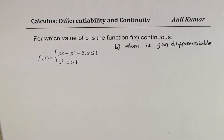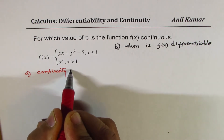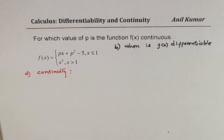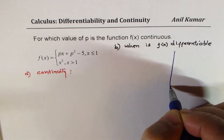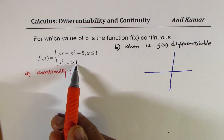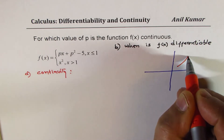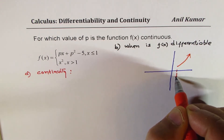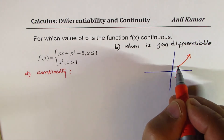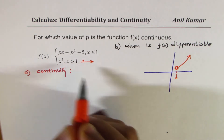Let's do part a and talk about continuity. The given function is a piecewise function. If I sketch this function, it should be a parabola x squared for values of x greater than 1. So if x equals 1, then 1 squared is 1 — it's a parabola going like this. When x is greater than 1, this point is not included, so we have a hole here on the right side of 1.